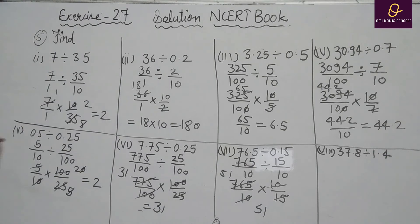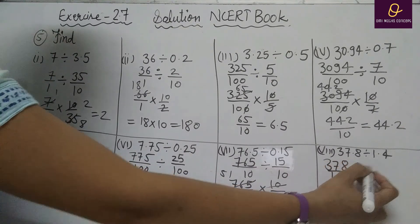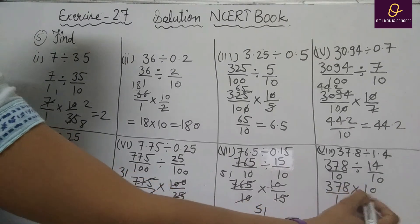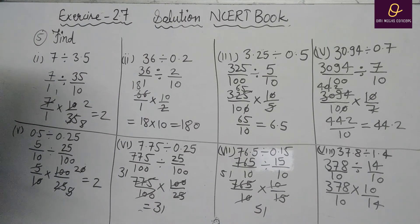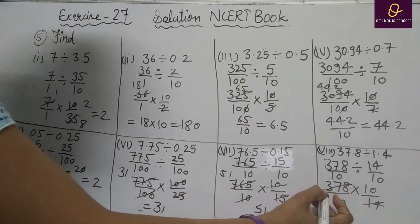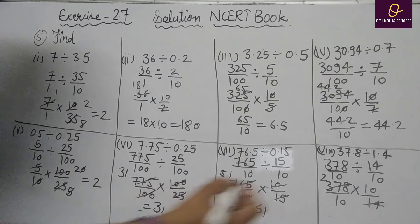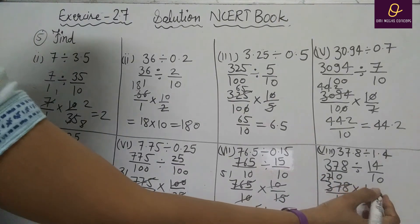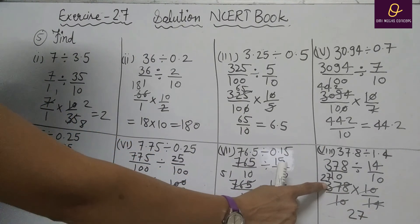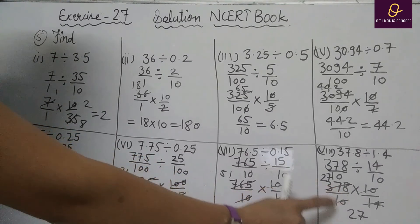Part H: 3.78 divided by 1.4. Remove decimal: 378 divided by 10, and 14 divided by 10. Divide changes to multiply; reciprocal of 14 by 10 is 10 by 14. Cancel 10 with 10. Then 14 into 378: 14×2=28, remainder gives 98, 14×7=98 — result is 27. Final answer is 27.